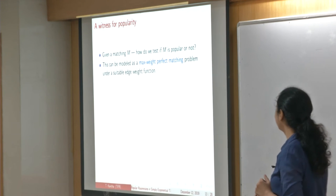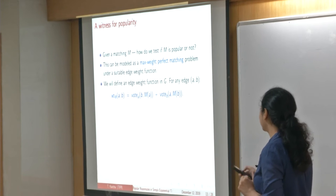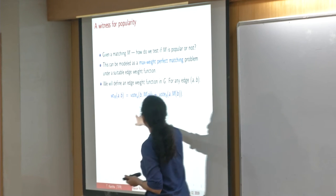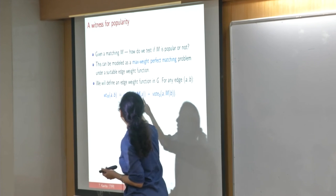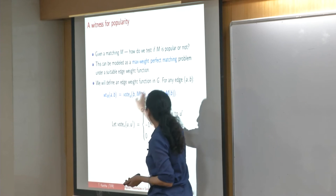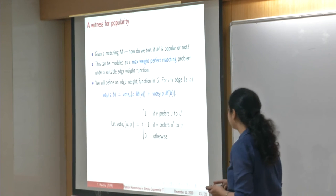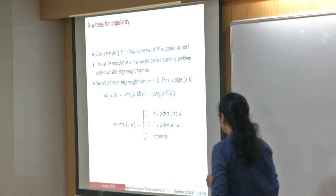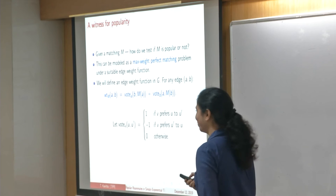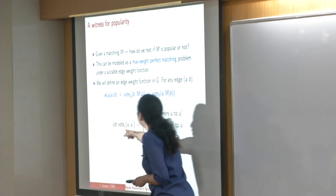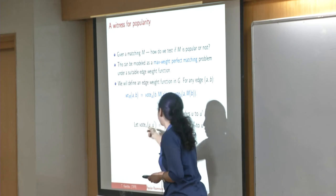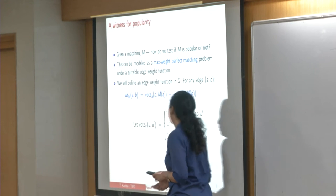This can be modeled as a max weight perfect matching problem under an appropriate edge weight function. For any edge AB, look at the votes A and B give to each other versus their respective partners in M. M(A) or M(B) could be null, which is the worst choice for any vertex — every vertex wants to be matched. The vote of a vertex for one neighbor versus another is +1 if it prefers the first neighbor, -1 if it prefers the second, and 0 if the two neighbors are the same.